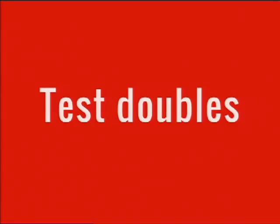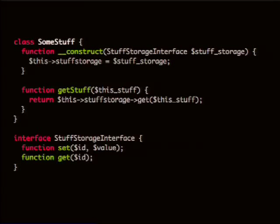I mentioned briefly mocks and stubs — to clarify these terms, they're two types of test doubles. It's a sort of a recent-ish term, but it's a useful one for describing these objects. Say we have this class — it's a super simple class, it takes a storage interface — and the only method it has is get_stuff, and it just delegates directly to stuff_storage->get. And then you create the interface that just has get and set. Extremely simple.